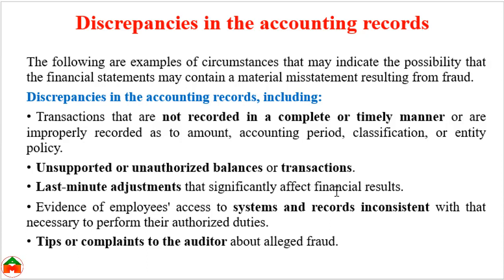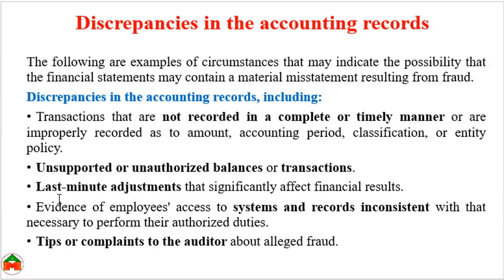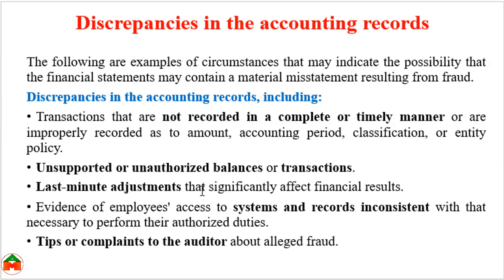The third discrepancy is last-minute adjustments that significantly affect financial results. Whenever employees adopt last-minute adjustments — meaning at the end of the accounting period, if there is any adjustment in the financial records that will have a large effect on financial performance — that type of adjustment can be considered a circumstance indicating the possibility of fraud.